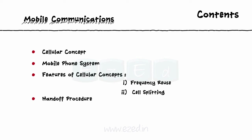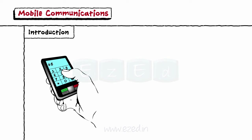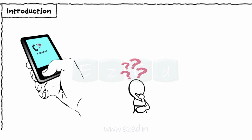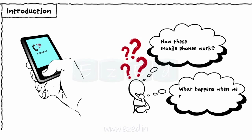When we have to call someone, we just take out our mobile phone and dial the required number. But has anyone ever wondered how these mobile phones work? What exactly happens when we make a call from our mobiles?